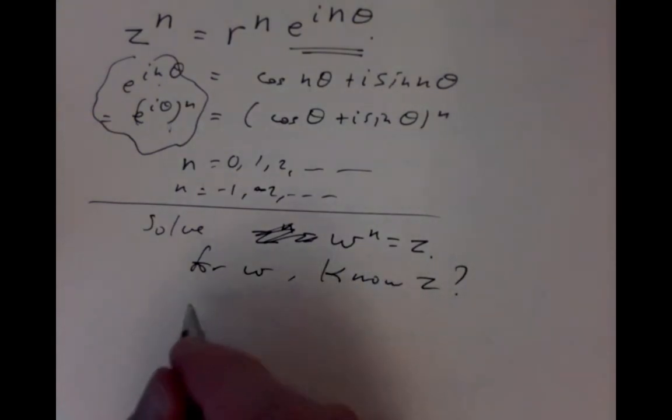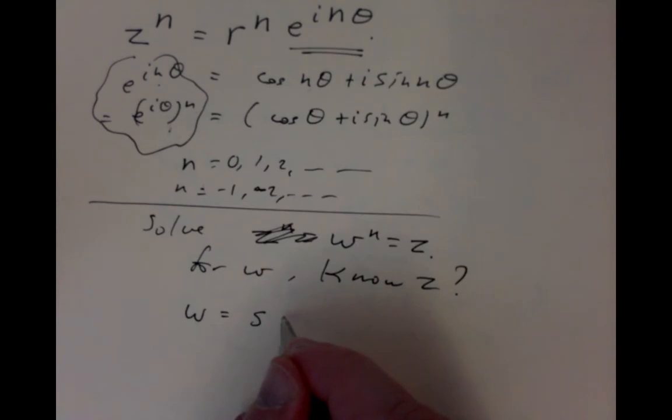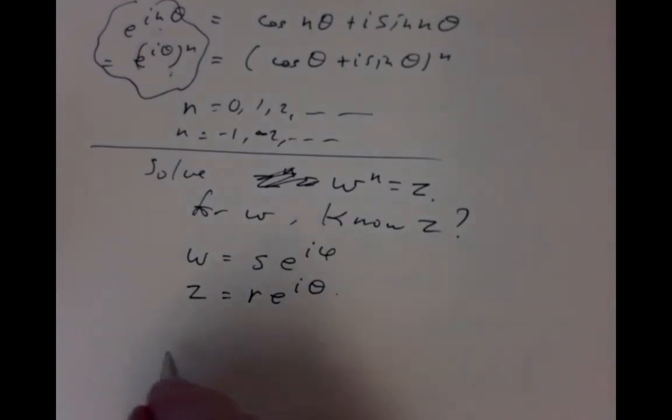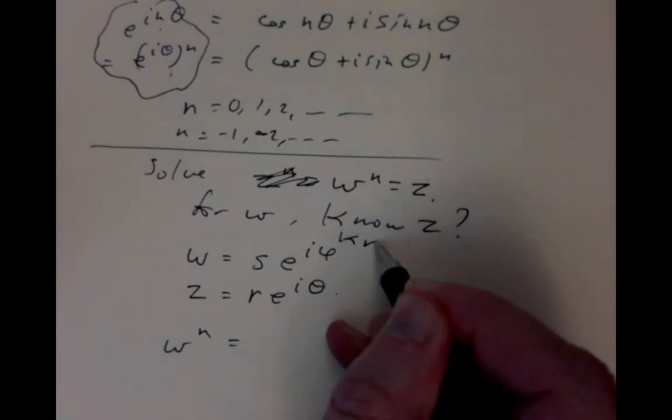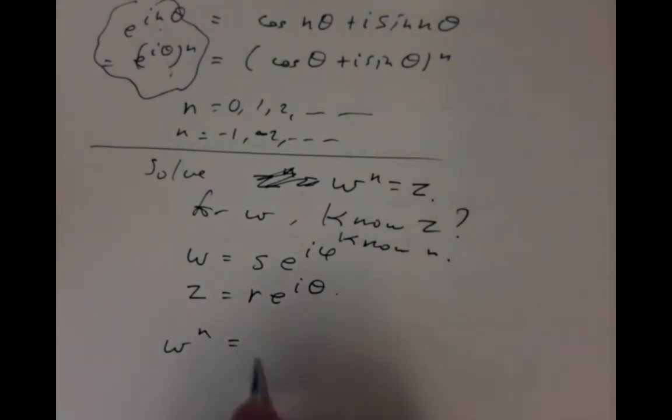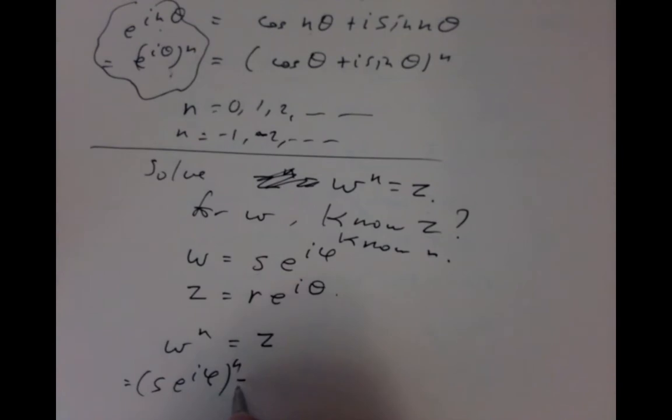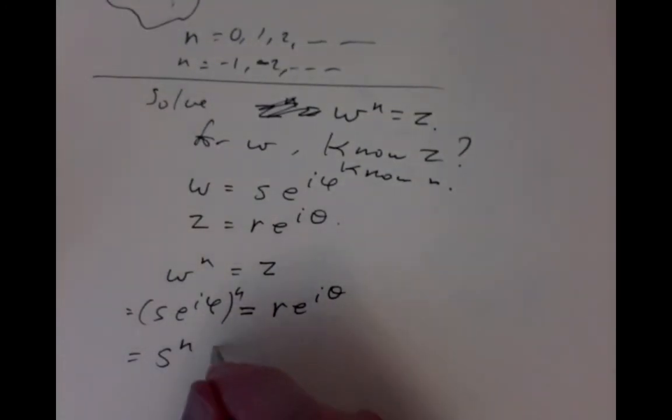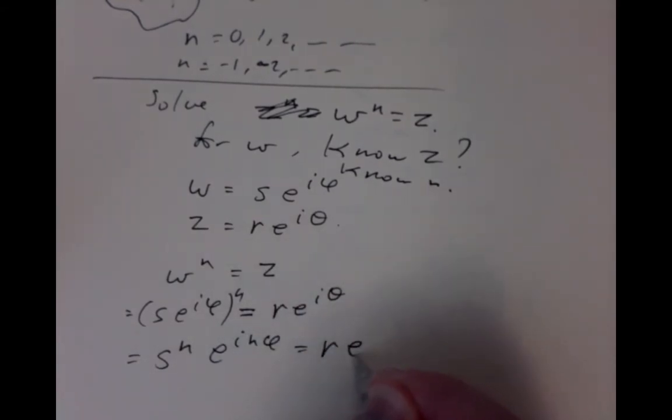We can plug in that w has to be some modulus and some argument, and z has to be some modulus and some argument. We know z and the value of n. So we have an unknown w, and this equation becomes s e to the i phi to the n equals r e to the i theta. We can simplify that by saying s to the n e to the i n phi equals r e to the i theta.